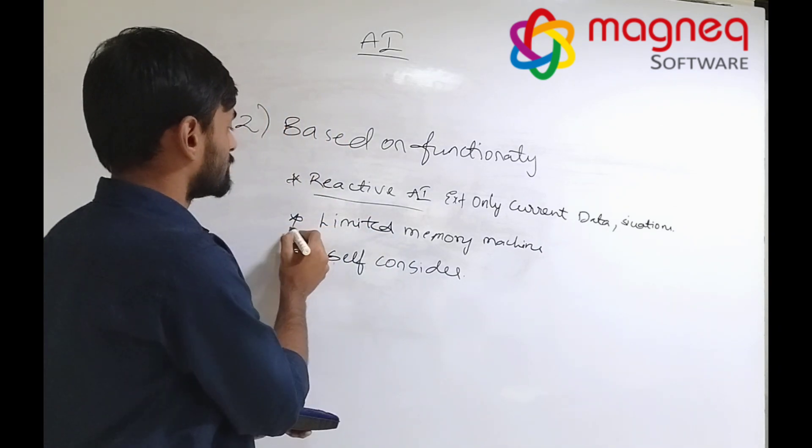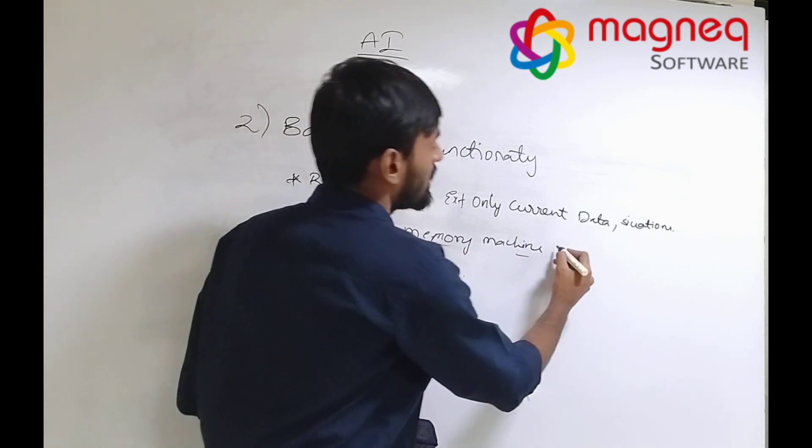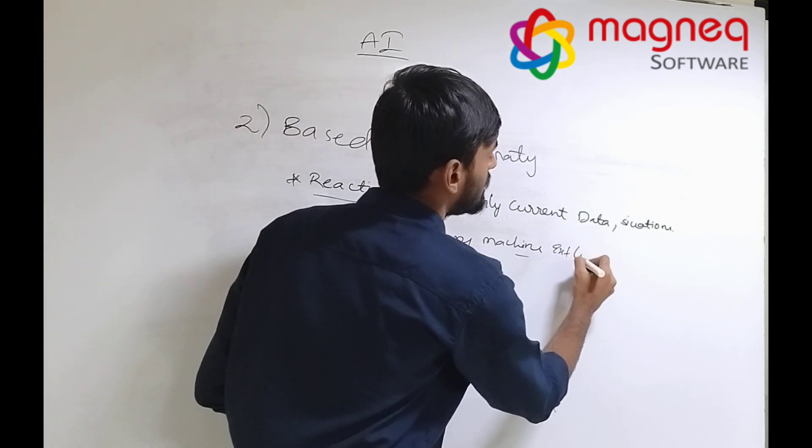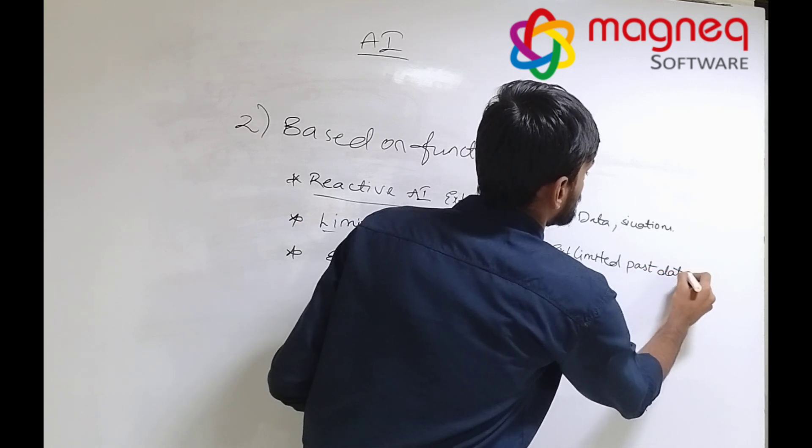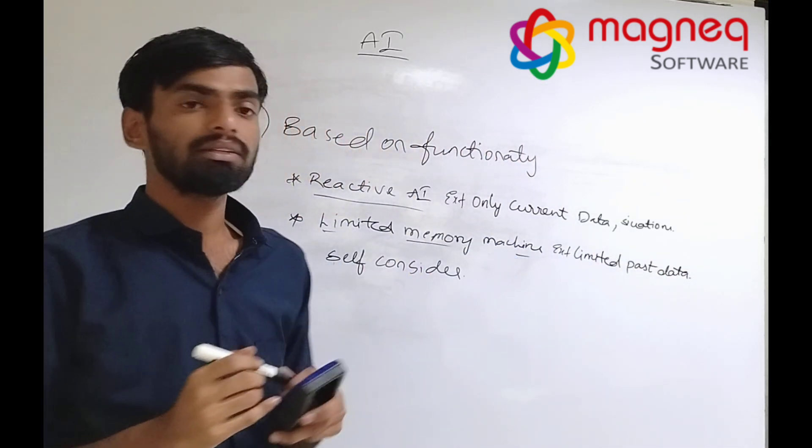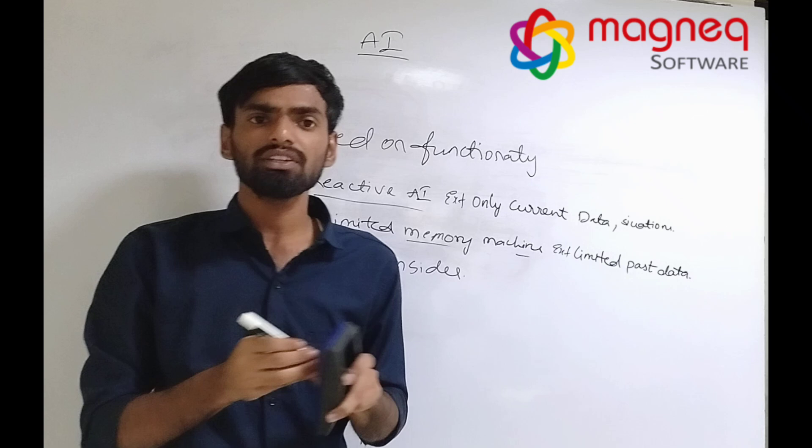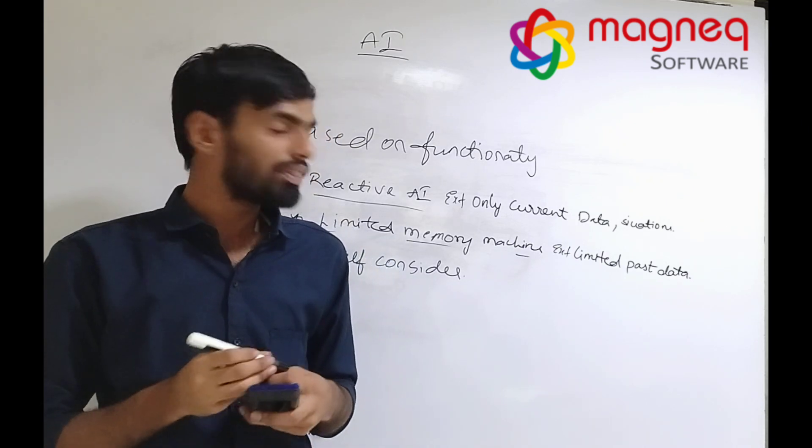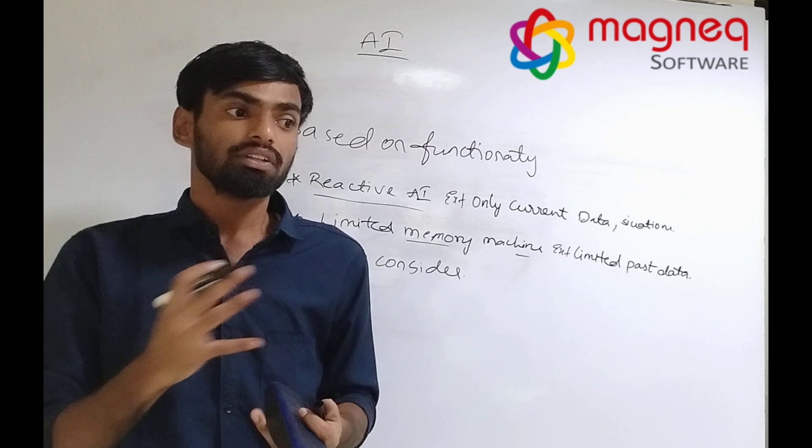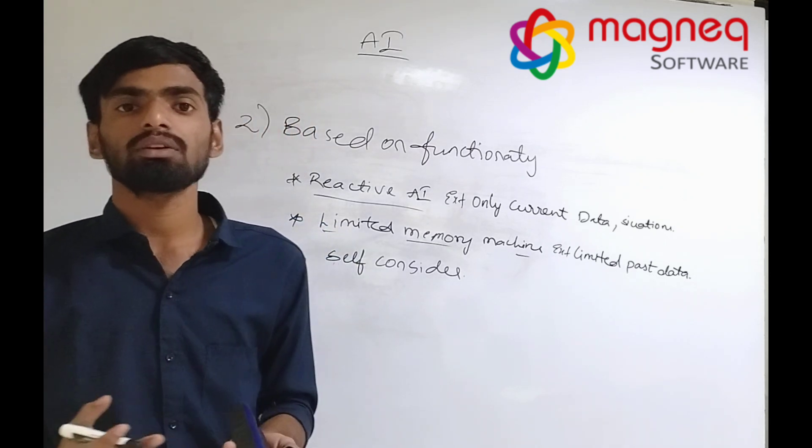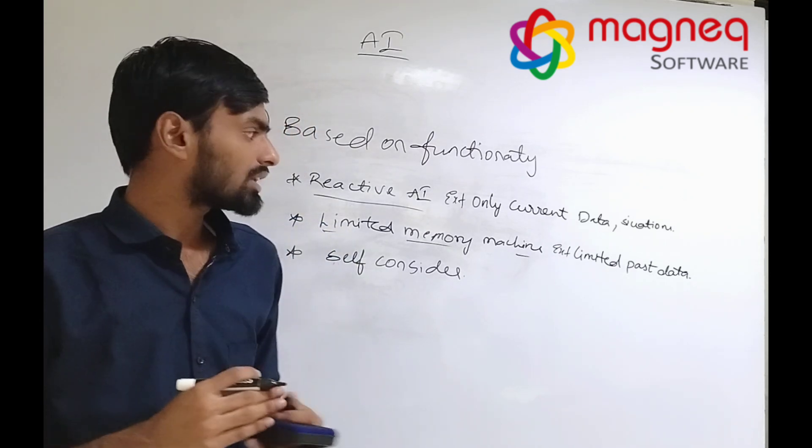Second one, limited memory machine. It has limited past data. So in the day market, past data is limited and based on that limited data, the future prediction values are calculated by the organization.